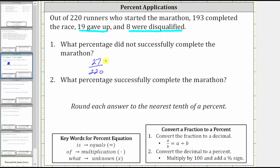Now we need to convert this fraction to a percentage. To convert a fraction to a percent, we first divide to convert to a decimal, then multiply by 100 and add a percent sign, or move the decimal point two places to the right and add a percent sign.